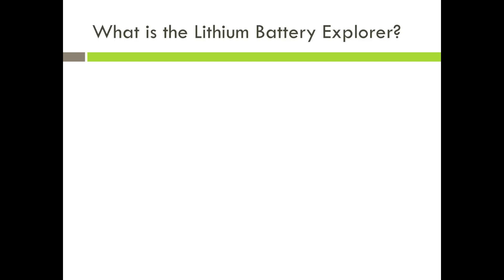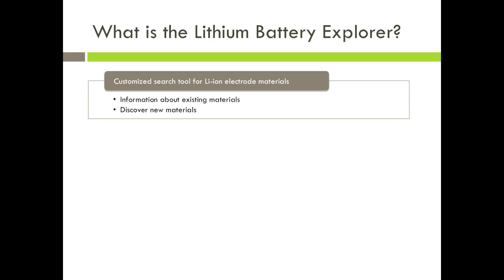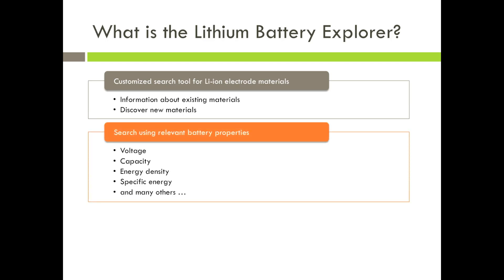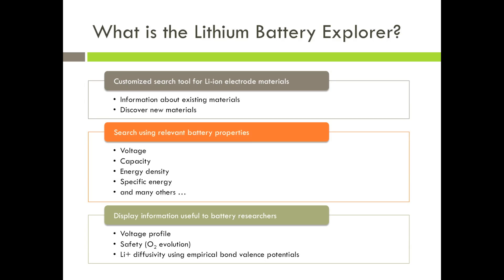The Lithium Battery Explorer is a customized search tool for lithium-ion electrode materials. It displays information about existing materials and also allows you to discover new materials. You can search for electrodes using relevant battery properties such as voltage, capacity, energy density, specific energy, and many others. The Battery Explorer also displays information useful to battery researchers, such as the voltage profile of a material, the safety, and the lithium-plus diffusivity.